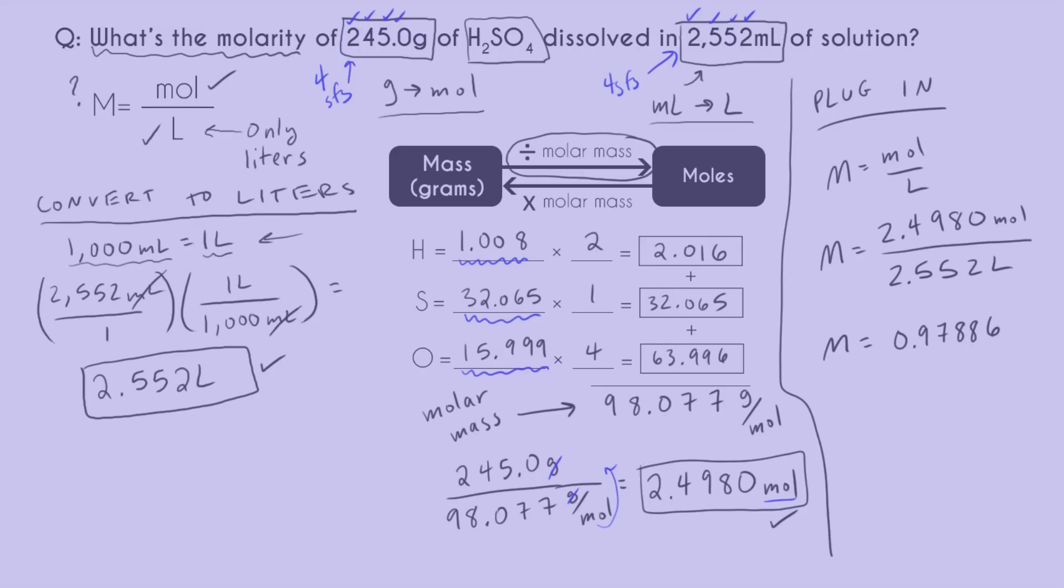My conversion fraction does not change my sig figs. I made sure to pull in all atomic weights that didn't decrease my number of sig figs, so it looks like four sig figs is my limitation. That means I can round to one, two, three, four. I have to round up. My final answer is 0.9789 molar.